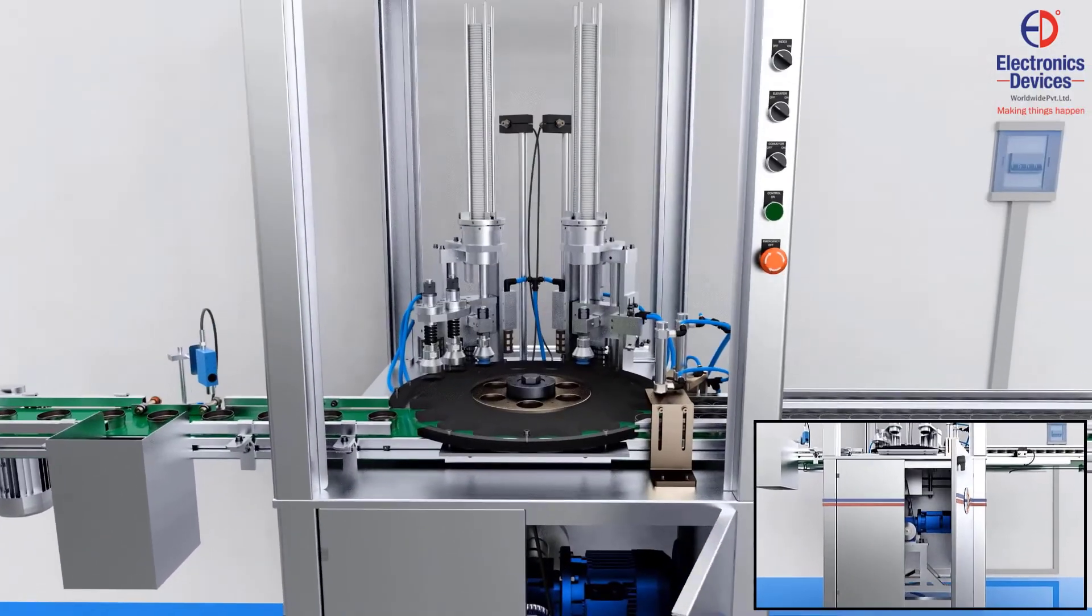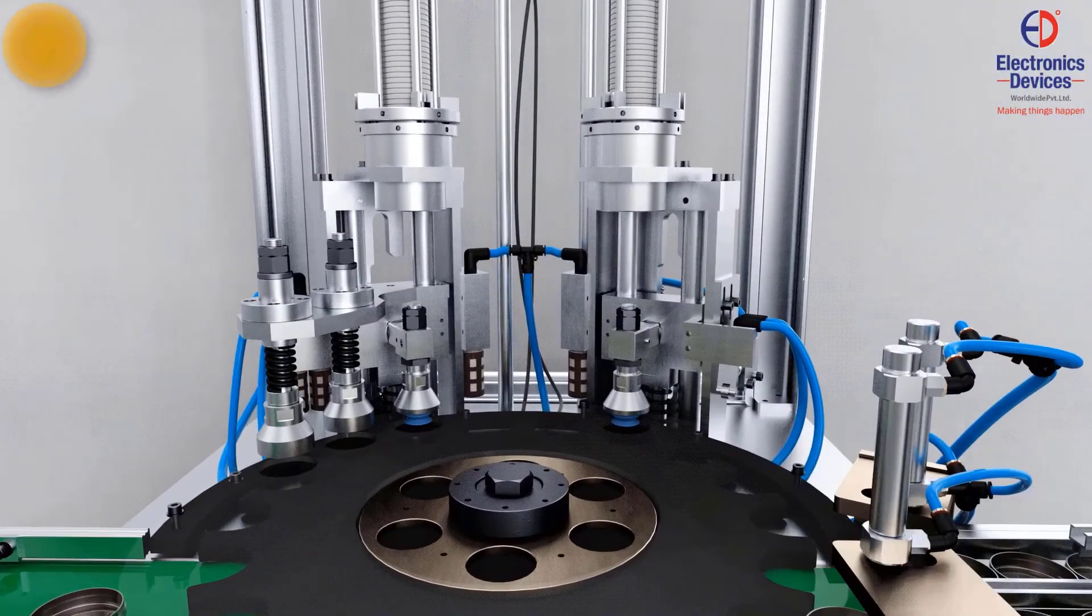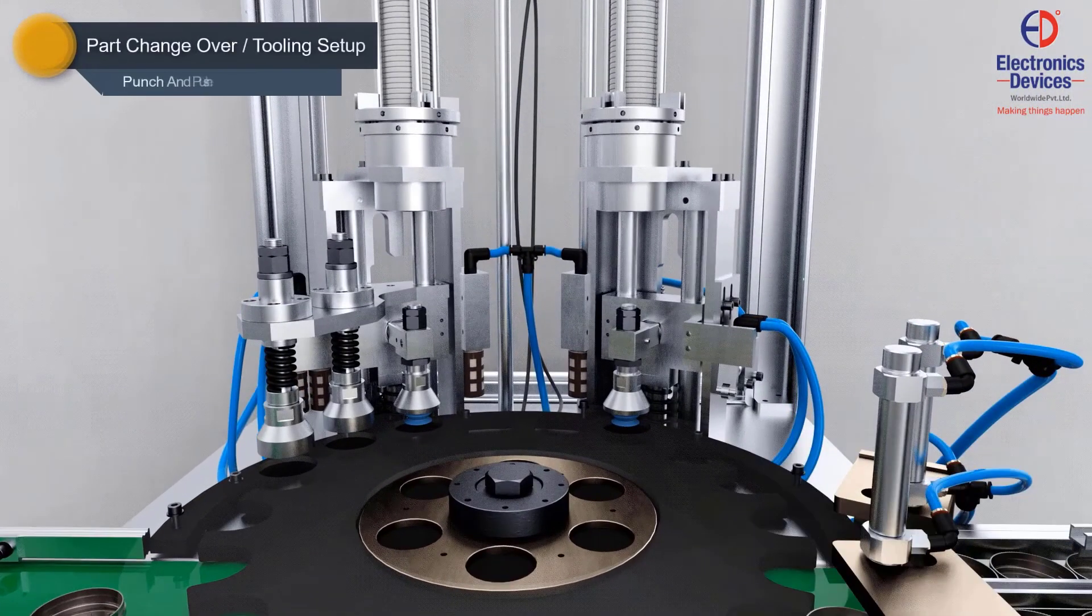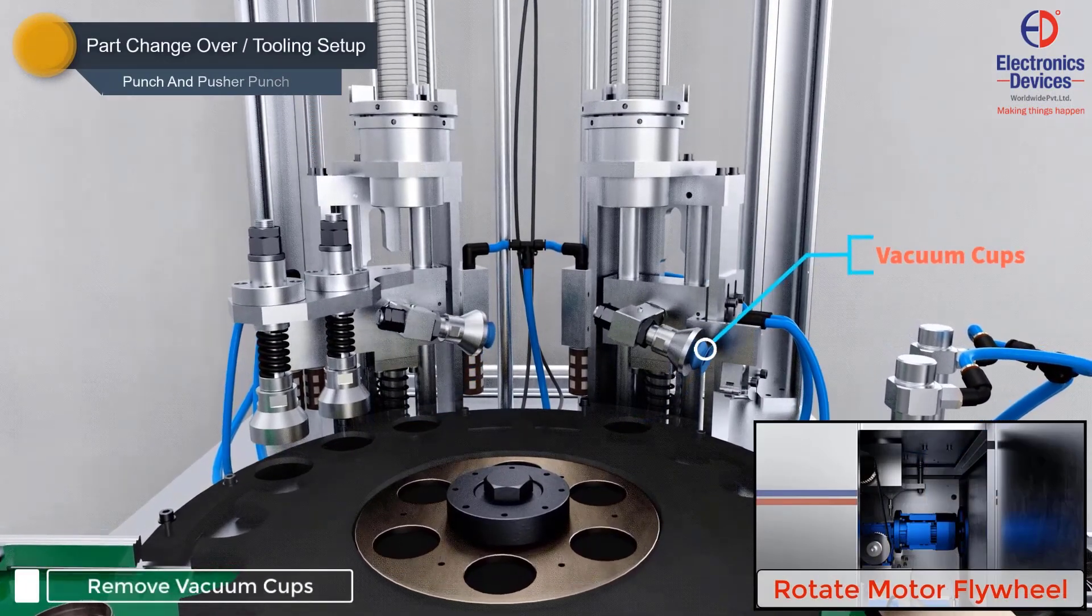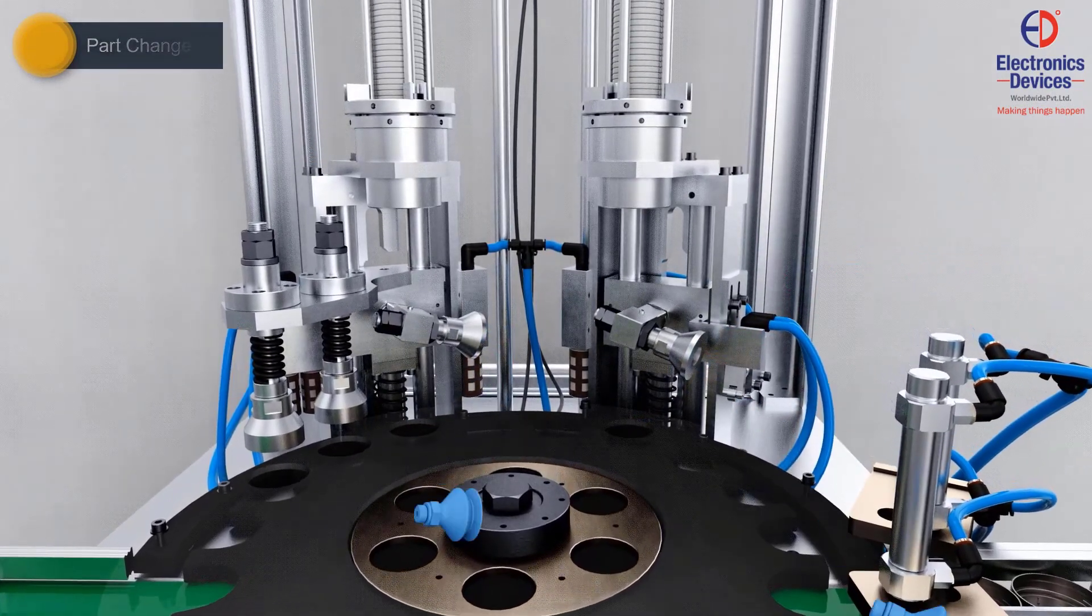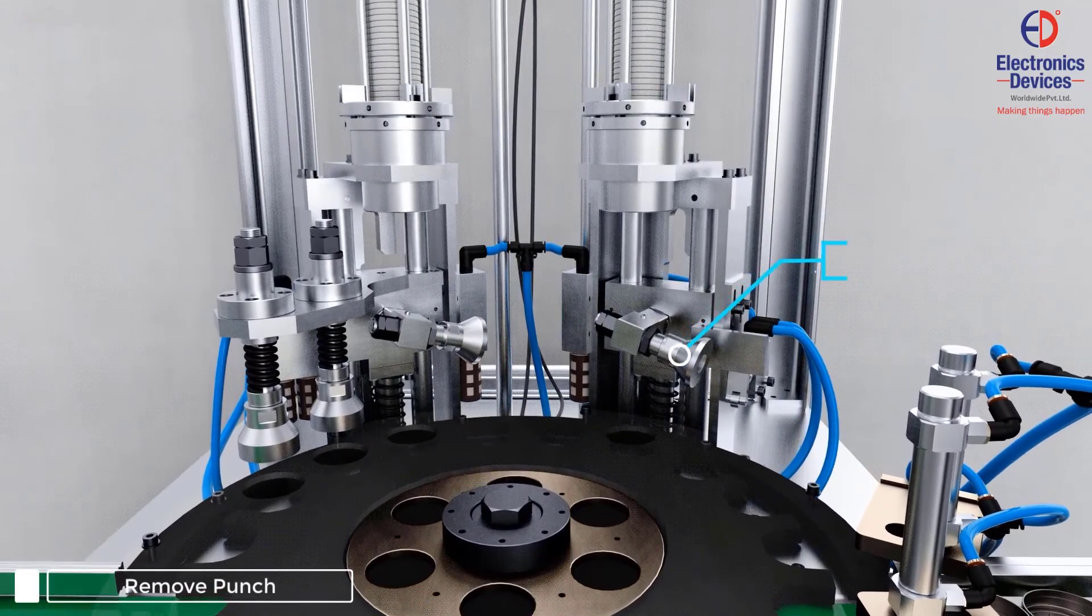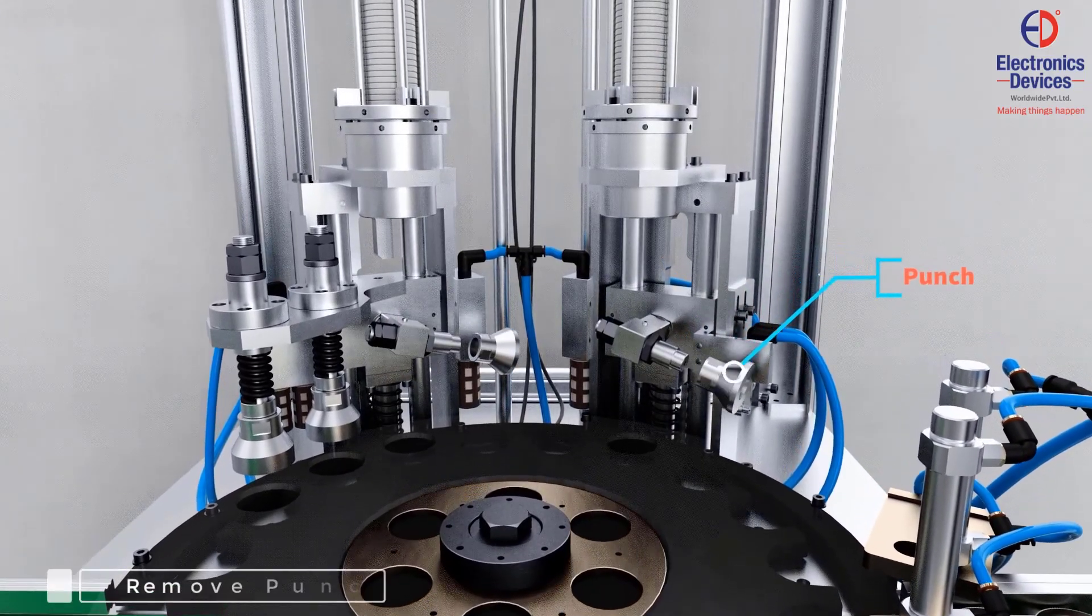The machine is already in one tool setting. For tooling setup or part changeover procedure, remove the vacuum cups, the punch, and pusher punch.